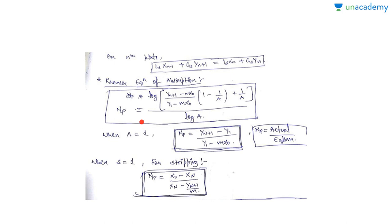The Kremser equation for absorption gives the number of plates Np as: Np = log[(y(n+1) − m·x0)/(y1 − m·x0) · (1 − 1/A) + 1/A] / log(A). There is no need to remember this equation — in the GATE examination it will be given. However, when the absorption factor A equals 1, this equation becomes indeterminate (0/0 form), and applying L'Hôpital's rule it reduces to Np = (Y(n+1) − Y1) / (Y1 − m·x0).